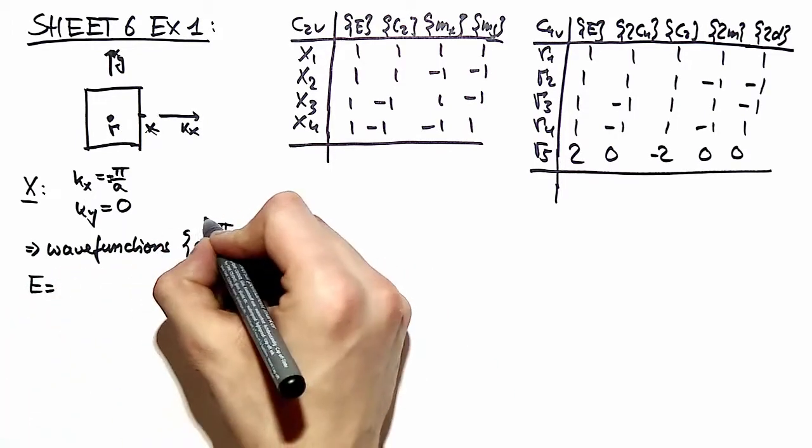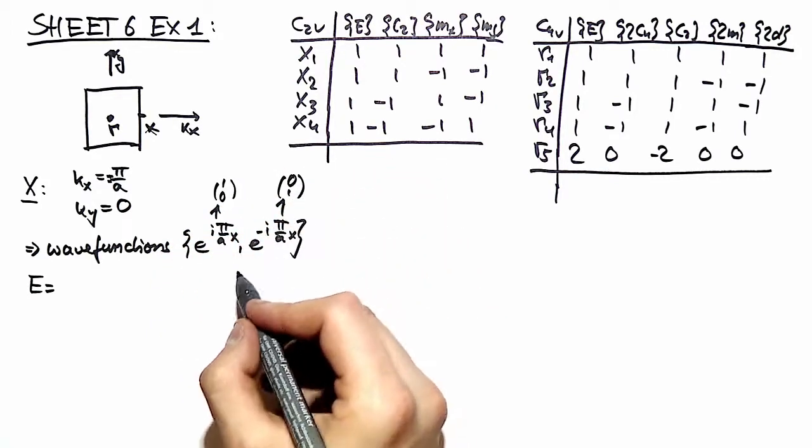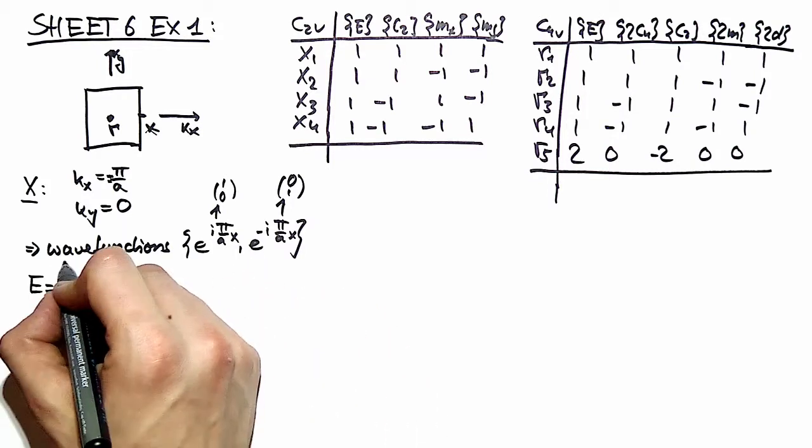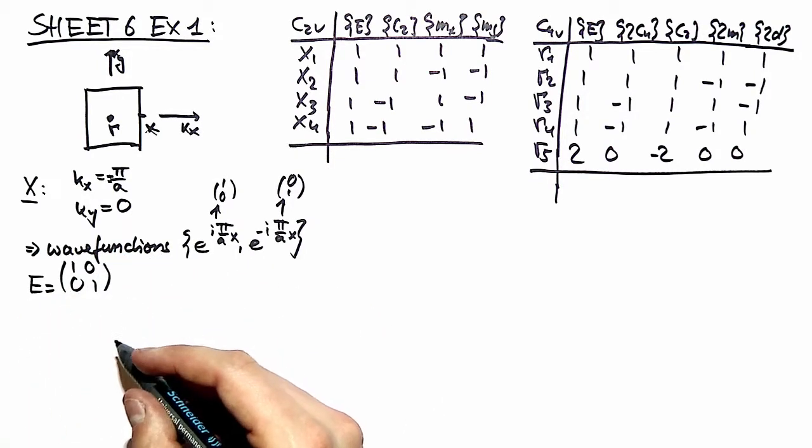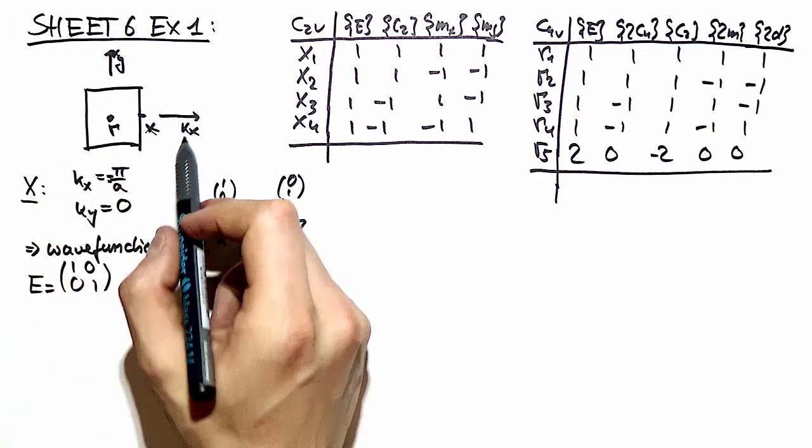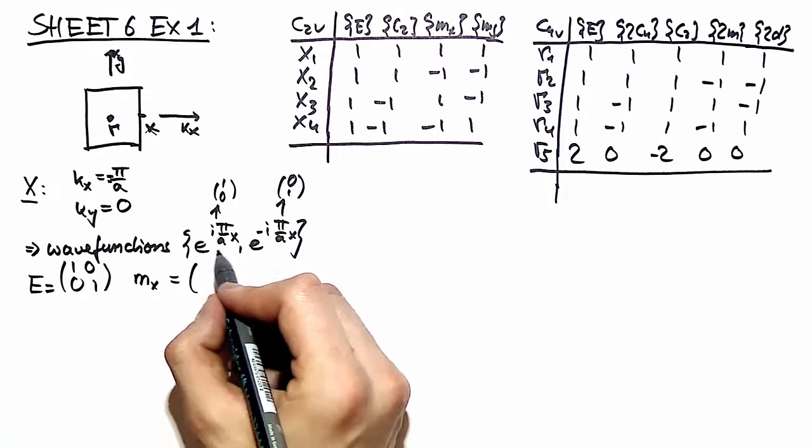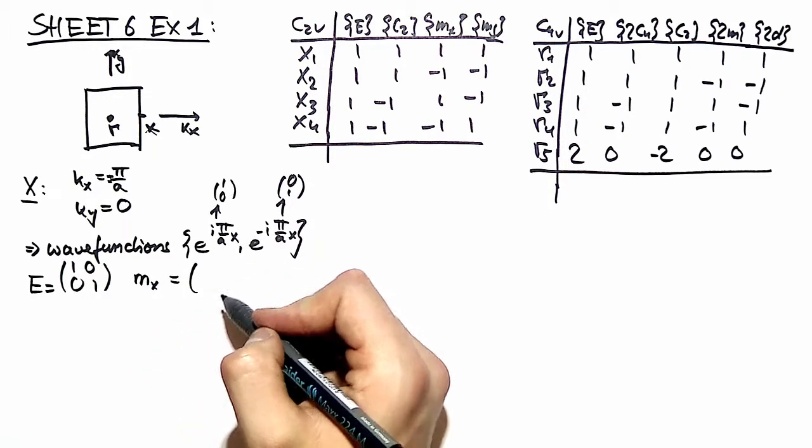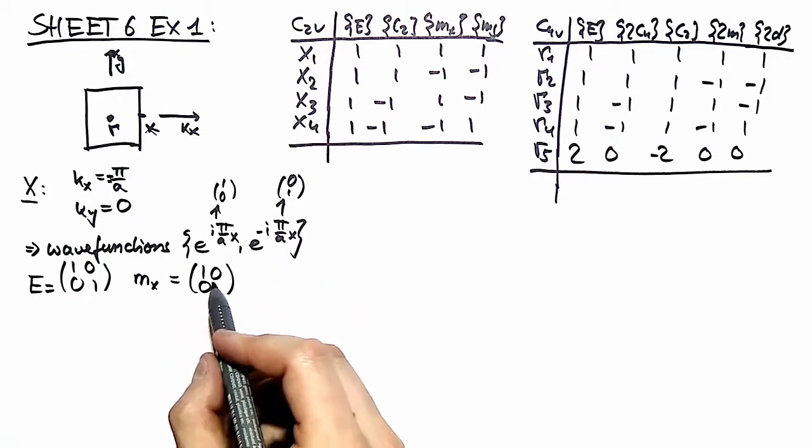The identity element, this gives us a basis vector (1,0) and this gives us a basis vector (0,1). The identity element of course leaves our two elements invariant. If we mirror at the x plane, because our basis vectors contain only x's, we are left with the same matrix over here.